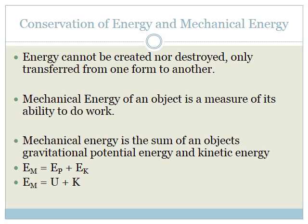Mechanical energy is the sum of the object's gravitational potential energy and kinetic energy. There are two ways you can write these: you can write EP for potential energy, or U for potential energy. Kinetic energy can be written as EK or K. Therefore, E mechanical (E mech) is equal to EP plus EK, or we can write EM equals U plus K. These are the same — just two different ways of writing it. Choose whichever suits you.